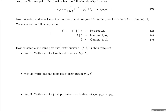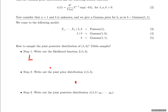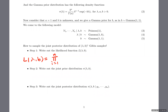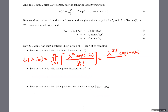So the joint likelihood of lambda and B — we know it should be the product from i=1 to n, and each observation follows a Poisson, so we follow the Poisson likelihood. It's going to be lambda to the power of y_i, and then exp to the negative lambda, divided by y_i factorial. Once we take the product, we have lambda to the power of sum of y, exp to the negative n*lambda, and in the denominator we have the product of all the y_i factorials.